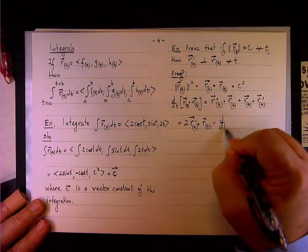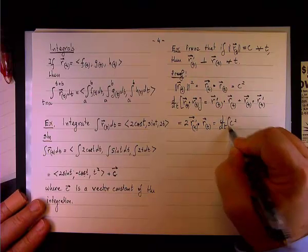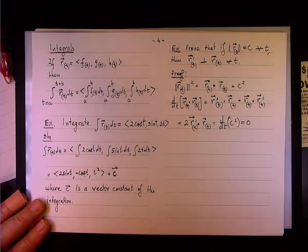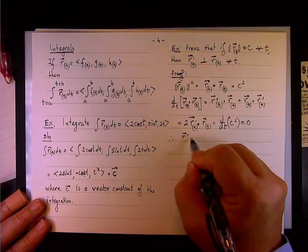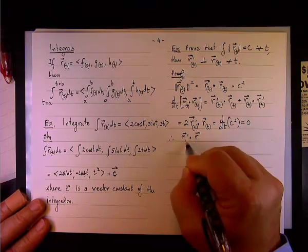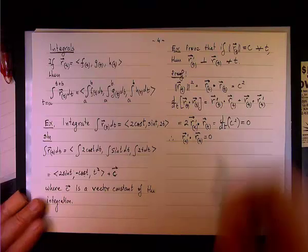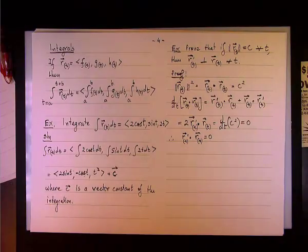But on the other hand, this equals d/dt of c squared, and that, folks, is zero. So the conclusion is that r' dot r equals zero. And what is the requirement for orthogonality?